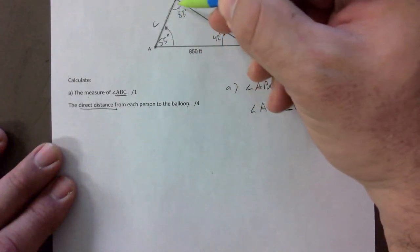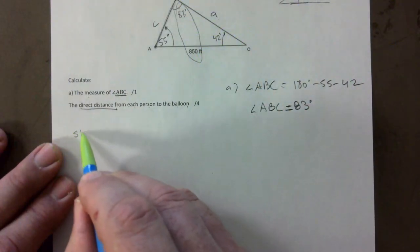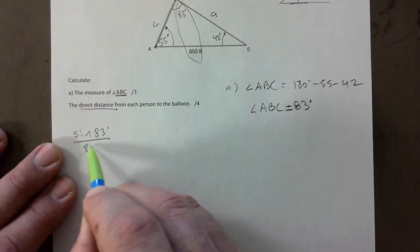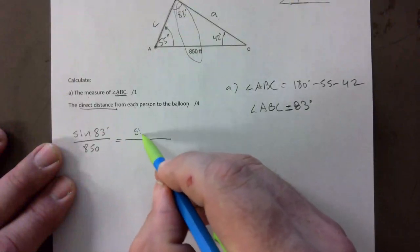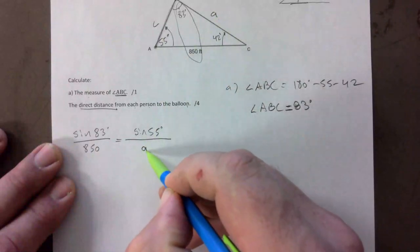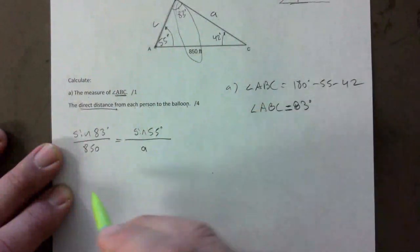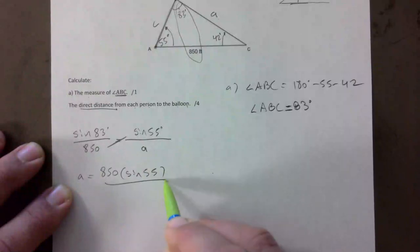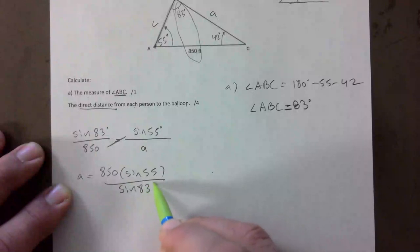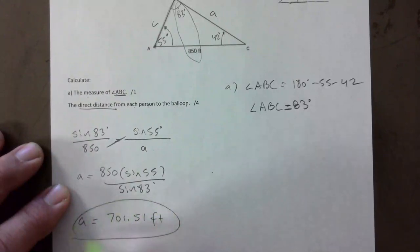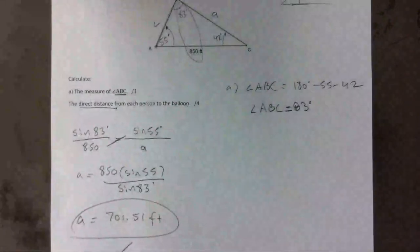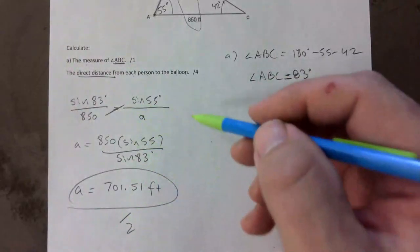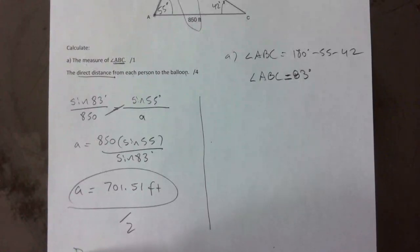So I have a pair, right. If this is 83 here I basically set it up for you to get the pair there. So sine of 83 over 850 and I'm going to go sine of 55, and just make sure I have letter a there. If you call this x then x should be down here. So a is found by cross multiplying and dividing, so it's 850 times sine of 55 and then divided by sine of 83. So a is 701.51 feet. You got two marks for this one for doing all this work.